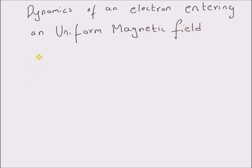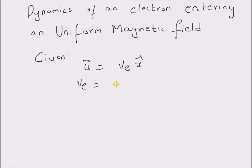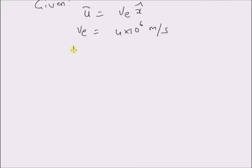So, given the following information: the velocity of the electron is given by u-bar is equal to Ve times x-cap. That is, the electron is moving in the positive x direction with a velocity Ve. Ve is given by 4 times 10 to the power 6 meters per second. The mass of the electron is known to be 9.1 times 10 to the power minus 31 kilograms. The charge is given by minus 1.6 times 10 to the power minus 19 Coulombs.